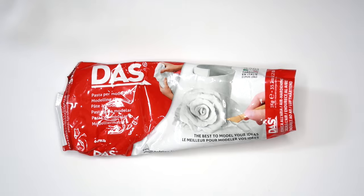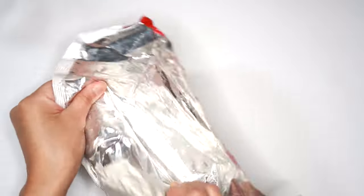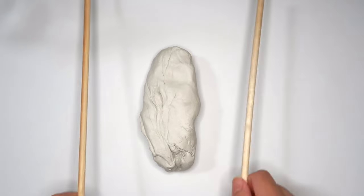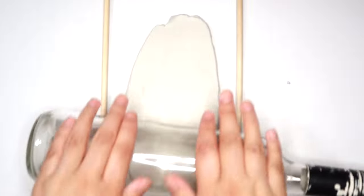Alright guys, so for our first air dry clay project, we're going to be making an incense holder. For this project, I'm going to be using Daz air dry clay. Grab some clay and roll it out. I put the two little sticks on the side to make sure that I rolled this out to be a quarter of an inch thick.